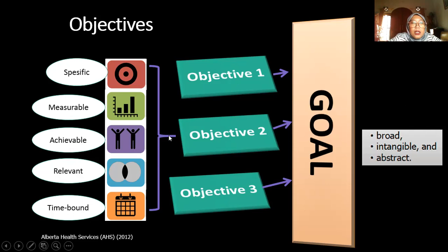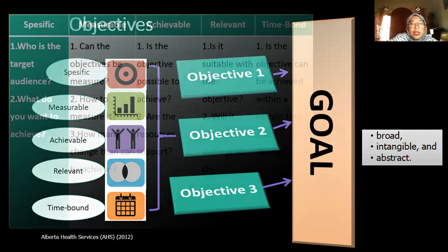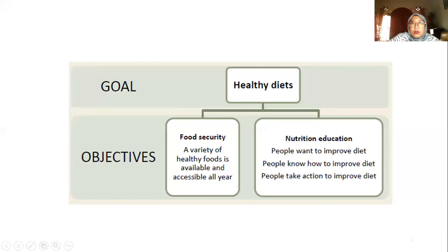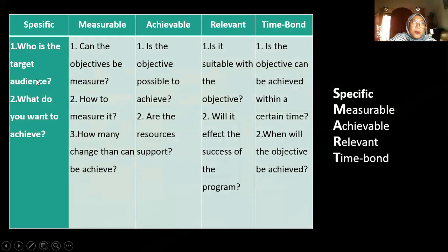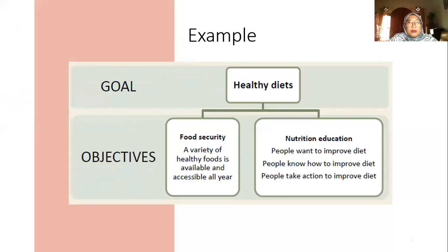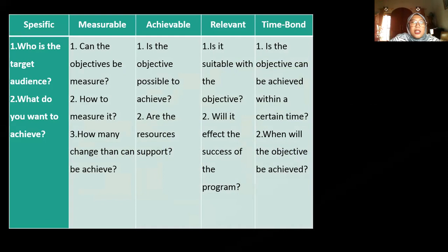SMART is also applicable in nutrition education. We have to be able to develop a SMART objective, not just an objective like 'to increase self-efficacy' — that is not a SMART objective. So what does SMART mean here? Specific should be able to answer: who is the target audience, and what do you want to achieve?